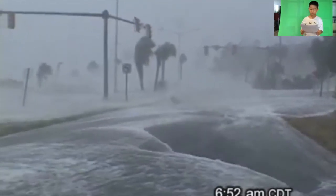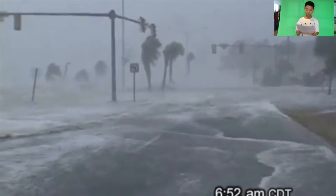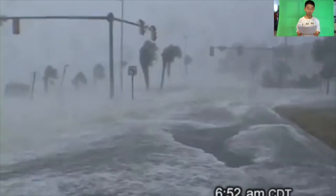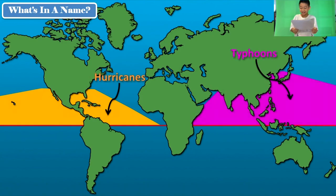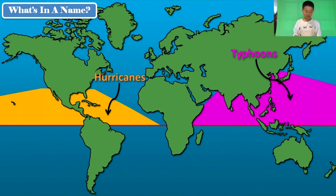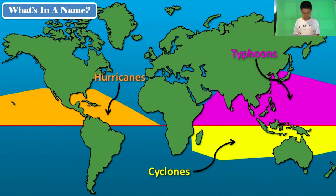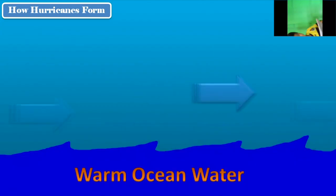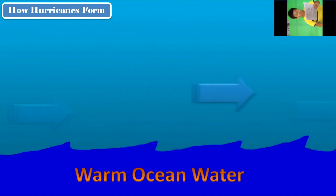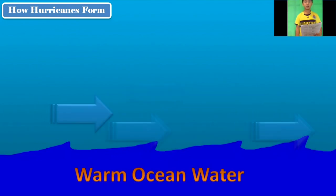Hurricanes are the most violent storms on Earth. People call these storms by different names such as Typhoon or Cyclone, depending on where they occur. Only tropical cycles that form over the Atlantic Ocean or Eastern Pacific Ocean are called hurricanes.